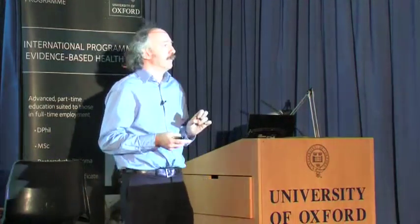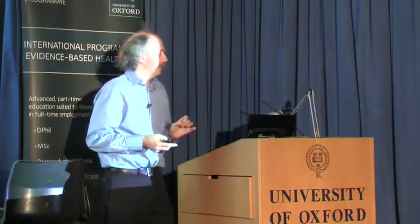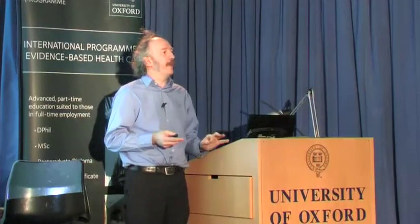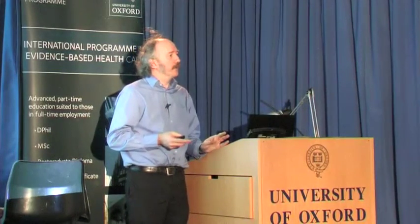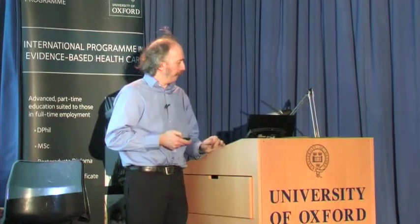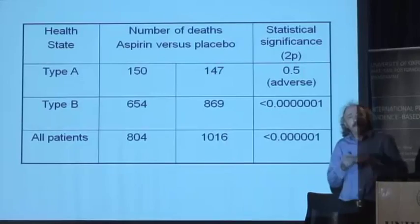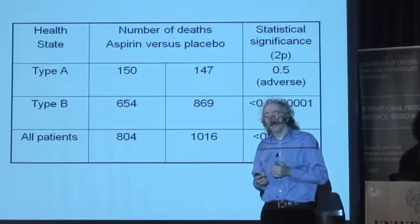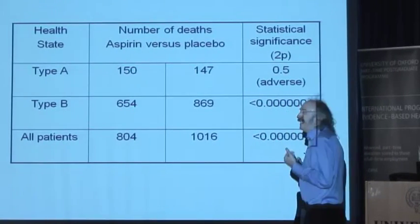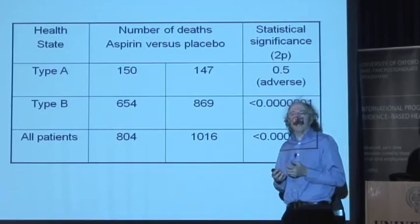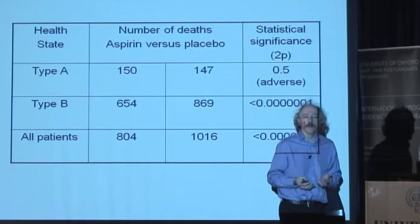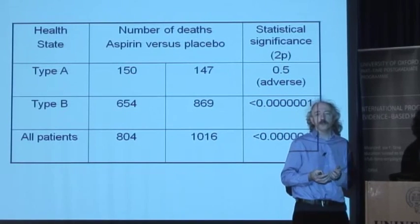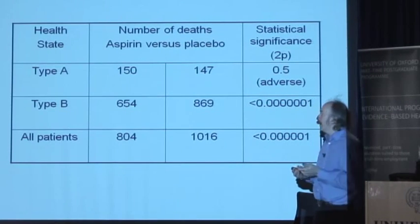Does an aspirin help keep them alive for the next 35 days? That's what this trial was about. 17,000 people were randomised. No doubt about it — it works. But there are many different types of people with a heart attack, and many different subgroup analyses were proposed and done for the ISIS-2 trial. This is one of them — you don't know what type A and type B are yet.